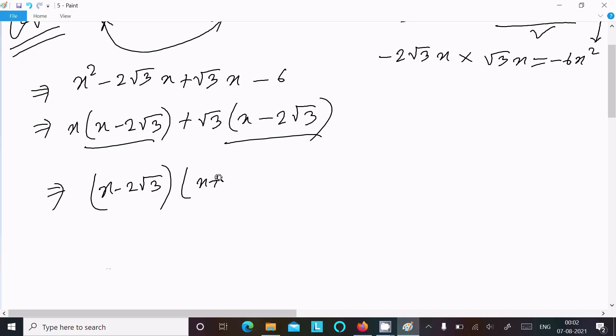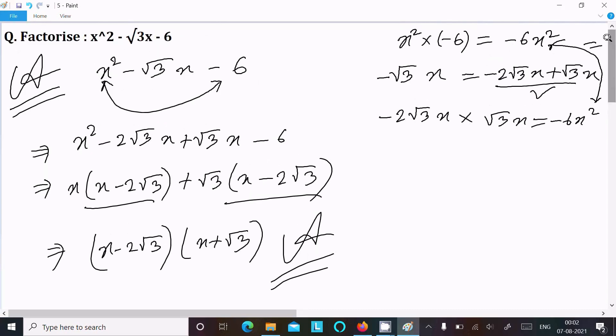This is the factorization of this equation: (x - 2√3)(x + √3). This is the correct factorization of x² - √3x - 6.